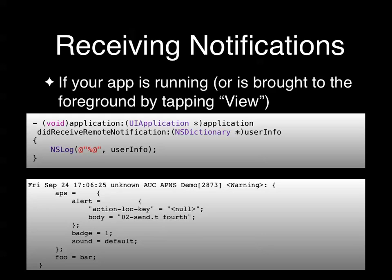Something worth noting: the full notification dictionary has the APS dictionary — with alert, badge, sound — but outside that APS dictionary you can send whatever random data you want in the JSON dictionary, up to 256 bytes total. That can be useful — for example in a chess game, when you get notified it's your turn with John, you could include the game ID so the app can directly load that game rather than just saying 'checking for new turns.'